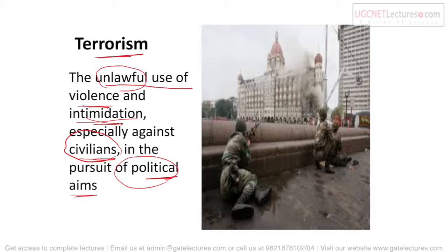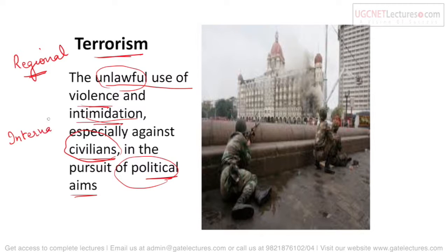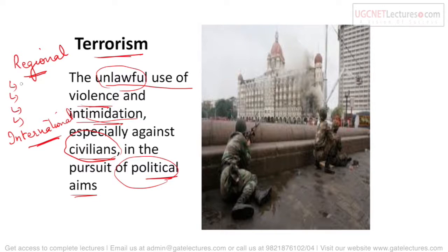Terrorism is of different types. The first is state or regional terrorism, which occurs within a particular state, country, or region. The second is international terrorism, which affects the whole world — for example, ISIS and Osama bin Laden.